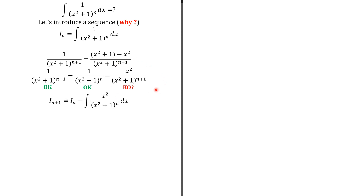Applying the integral to both sides, we get I_{n+1} equal to I_n minus the integral of x² over (x² + 1)^{n+1}. So let's handle this remaining integral.